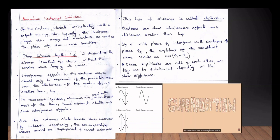The electrons carry energy, momentum, and phase. We have to change everything — we have to decide the output and the coherence capacity.